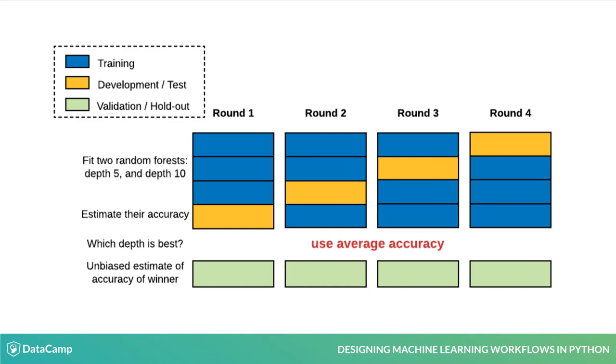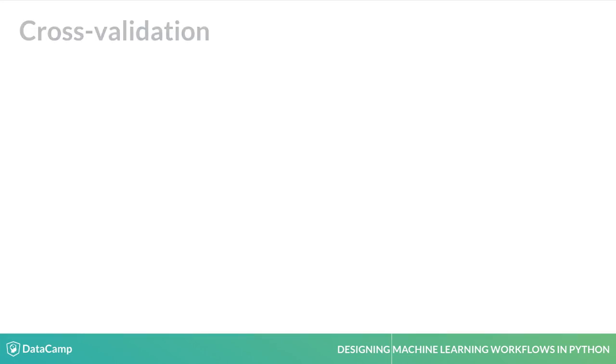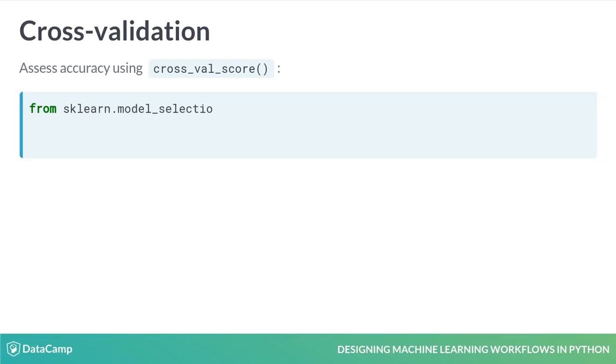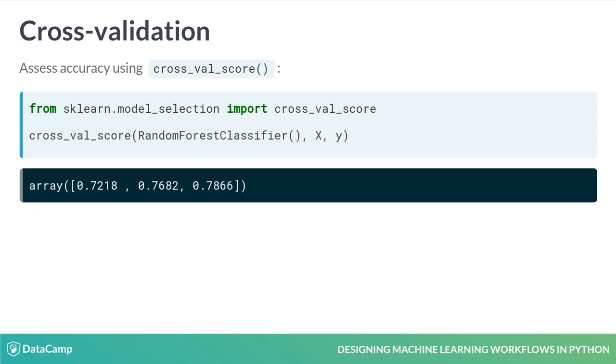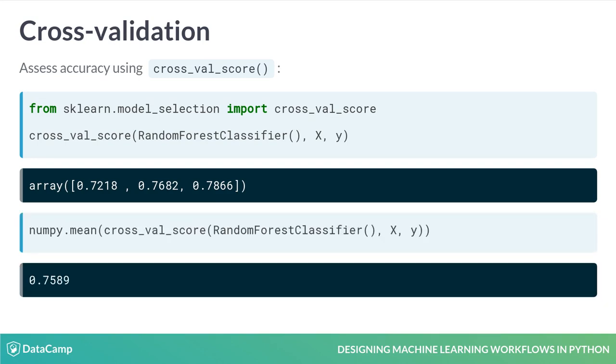Cross-validation is implemented as cross_val_score in the scikit-learn model selection module. The function takes as input a classifier instance and the full data X and y, which it then proceeds to split several times, three times by default. The result are three estimates of accuracy, one for each run, that can be averaged using mean from NumPy.